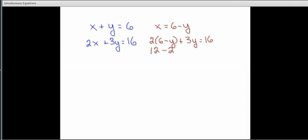So we have 12 minus 2y plus 3y equals 16. Subtract 12 from both sides, combine the negative 2y and the positive 3y, and now we have y equals 16 minus 12, or 4.